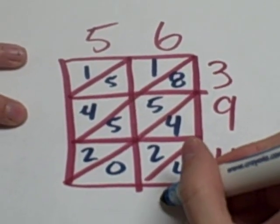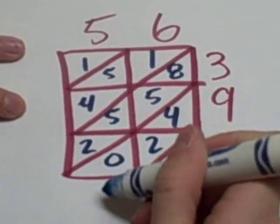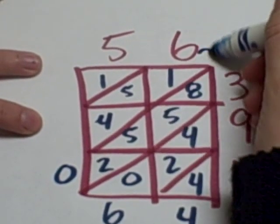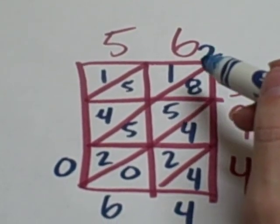And now we add up the diagonals. So 4, 6, 8, 13, 18, 20, 2, 1.